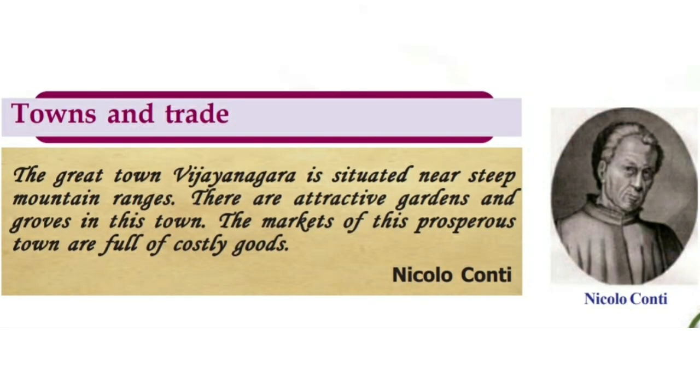Now let's move on to towns and trade. Here is Italian traveller Niccolo Conti's description: 'The great town Vijayanagara is situated near steep mountain branches. There are attractive gardens and groves in this town. The markets of this prosperous town are full of costly goods.' The Vijayanagara kingdom is located near steep mountain branches and its towns were filled with many diverse and costly goods.